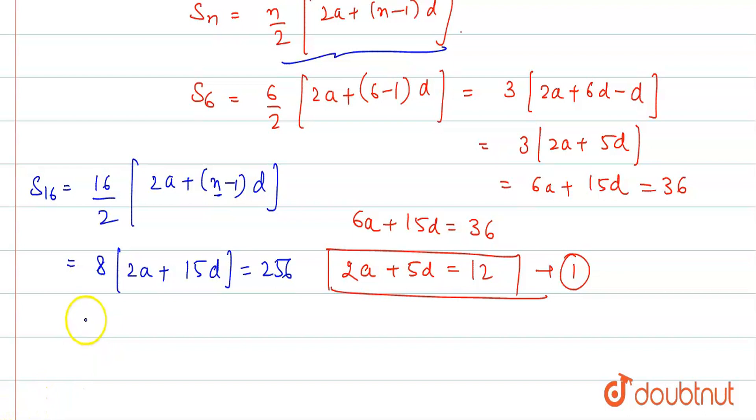So, 2a plus 15d equals 256 divided by 8 is 32. So, we have this as equation 2.